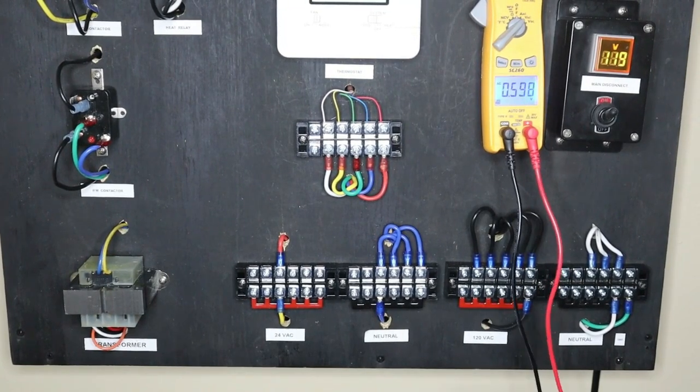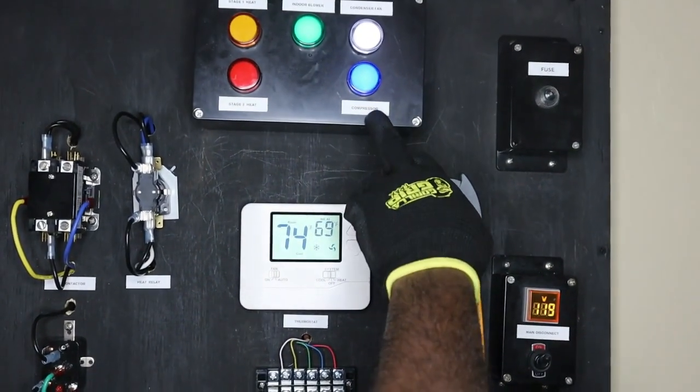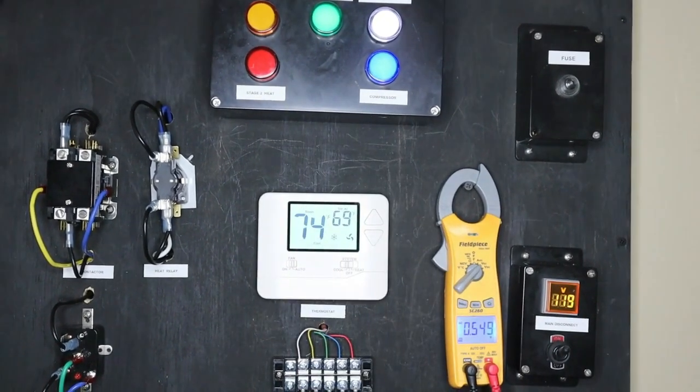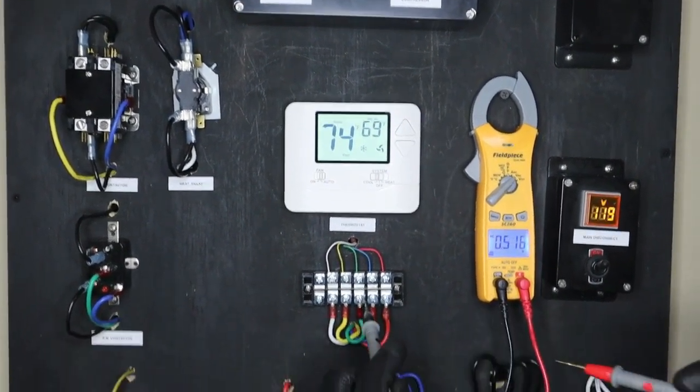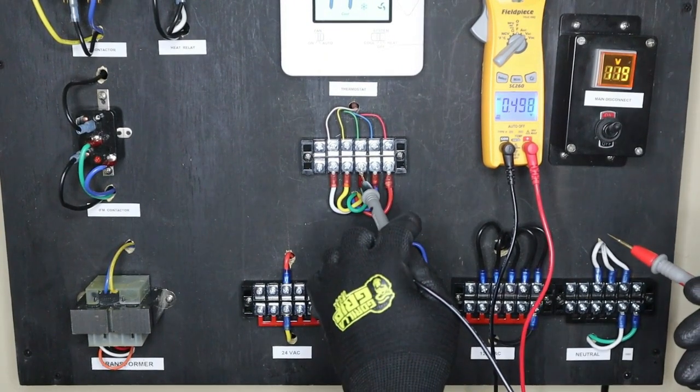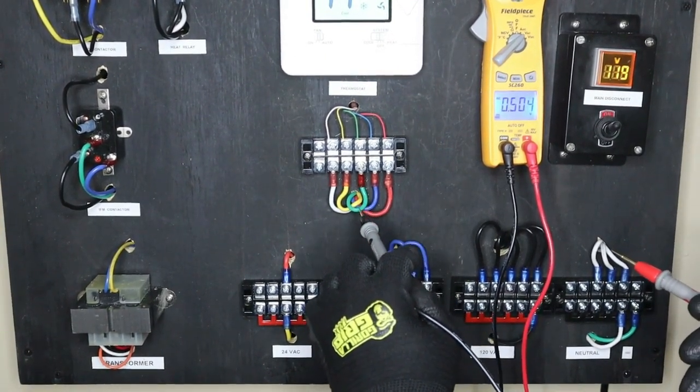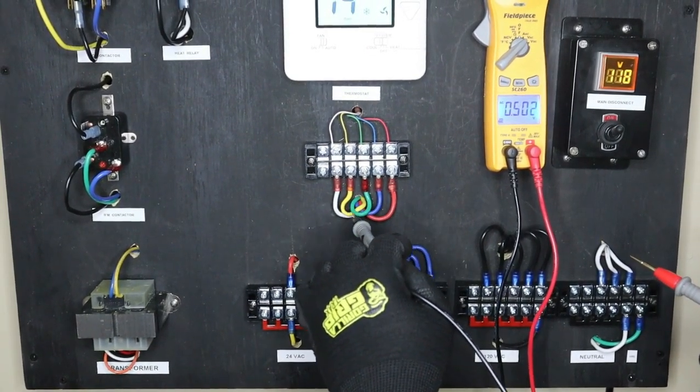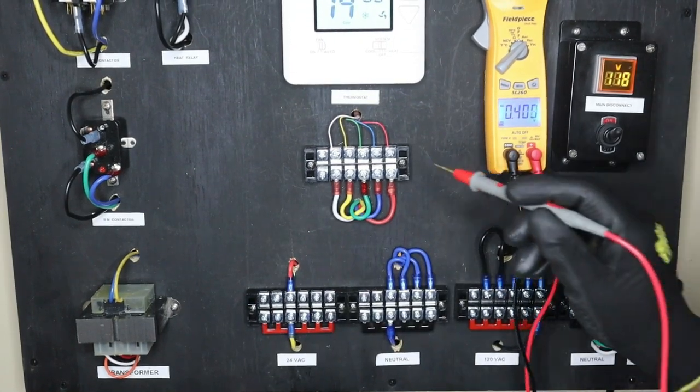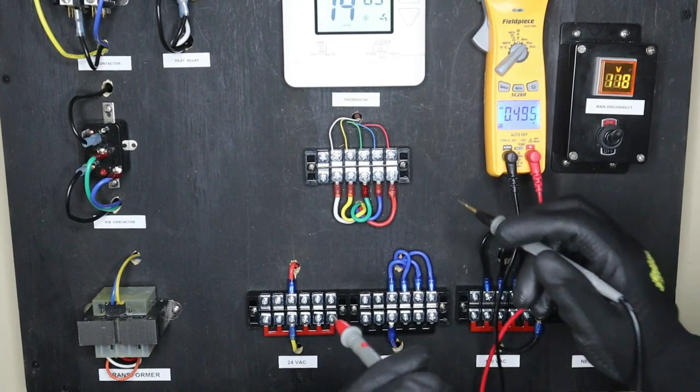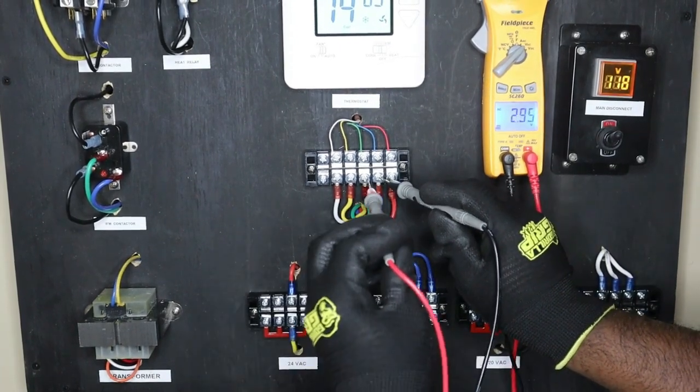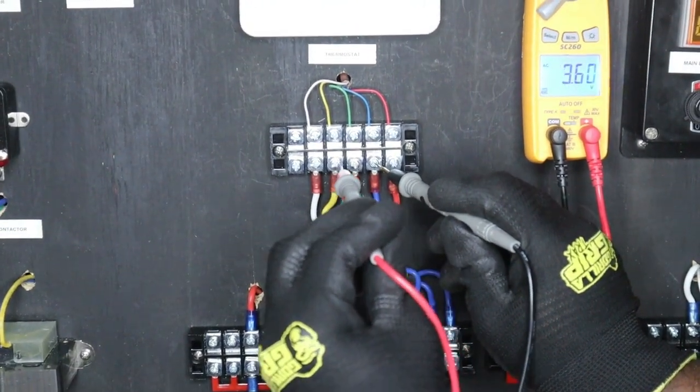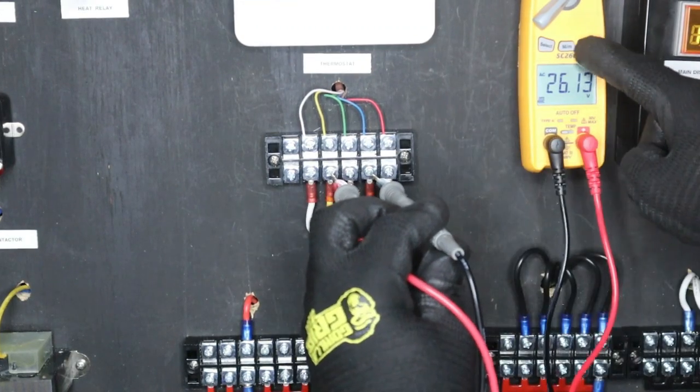Now currently as you can see the compressor is on, the condenser fan is on, and also the indoor blower is on. So with that being said I should have 24 volts on my indoor fan motor hot. I should also have 24 volts on my cooling which is my yellow wire, so I can place one multimeter lead on the neutral. I should have 24 volts here, measuring 26.